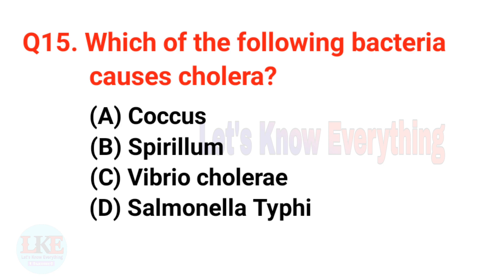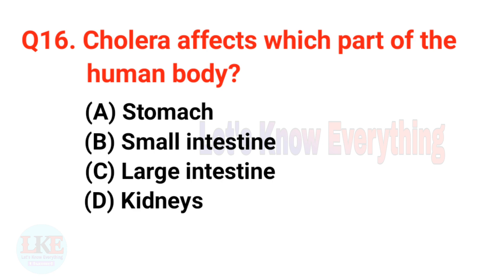Question number fifteen: which bacteria causes cholera? The right answer is option C, Vibrio cholerae. Question number sixteen: cholera affects which part of the human body? A) Stomach, B) Small intestine, C) Large intestine, D) Kidneys. The right answer is option B, small intestine.